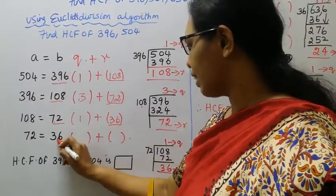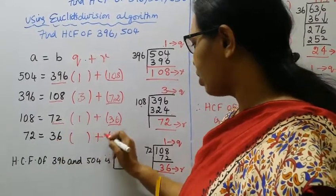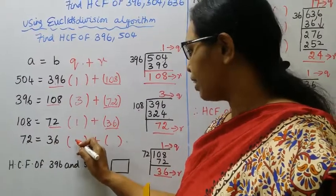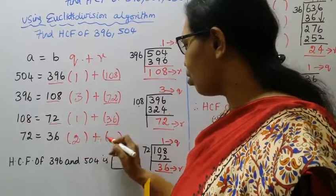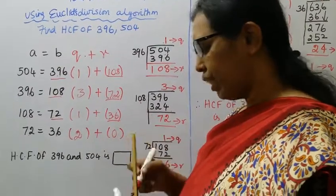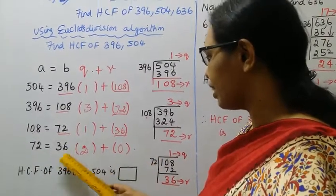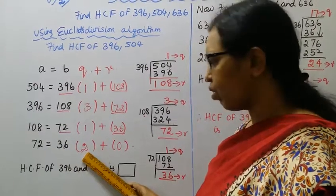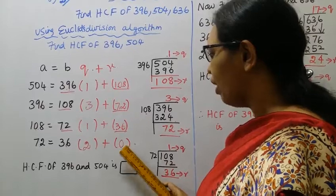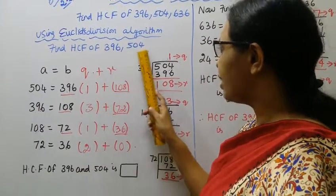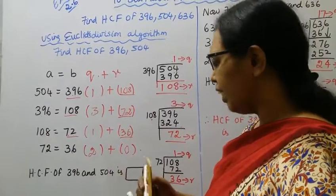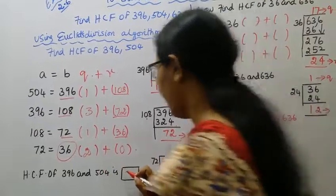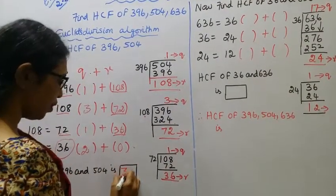Remainder is 0. So the divisor at this step is 36. Therefore HCF of 396 and 504 is 36.